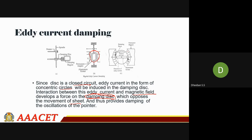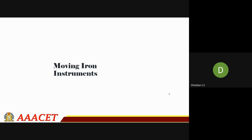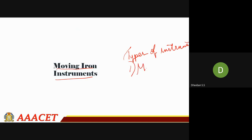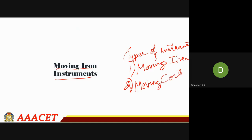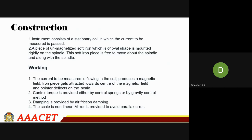Greeting students. Now we'll be seeing about moving iron instruments — the types of instruments we'll be seeing. In these types of instruments, the first primary instrument is your moving iron, followed by your moving coil. These two are the most commonly used electronic instruments for measurement purposes.